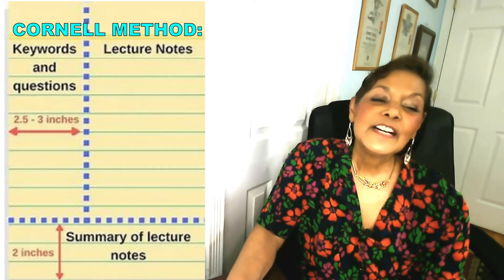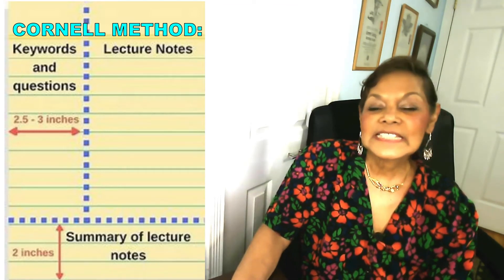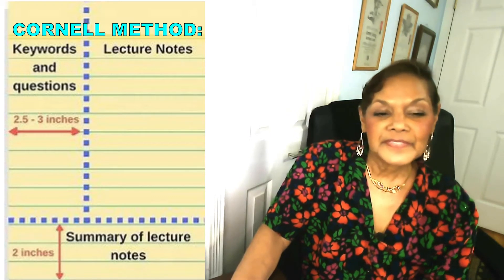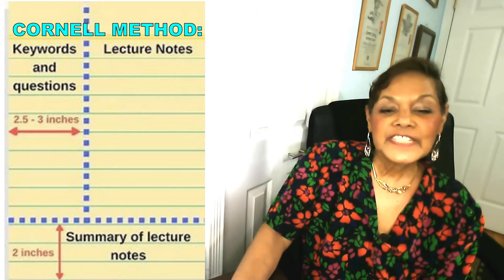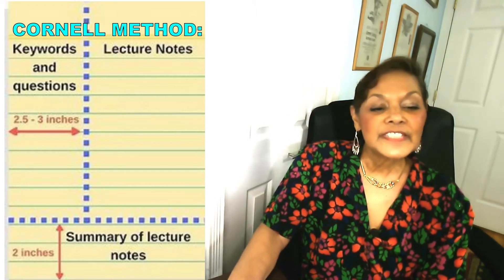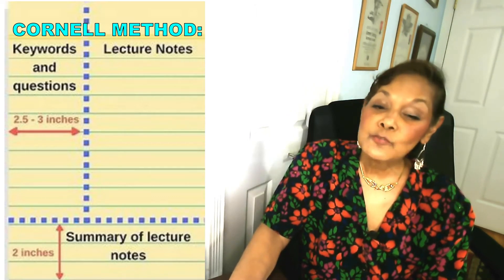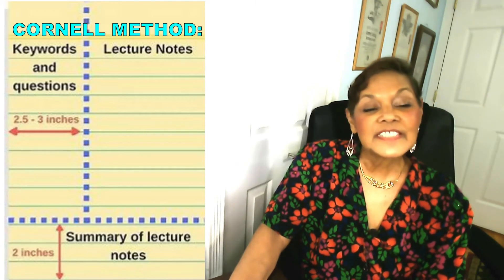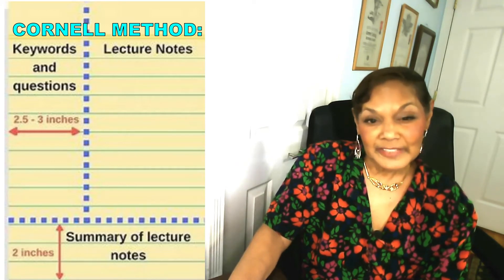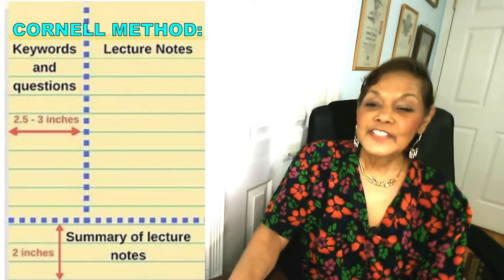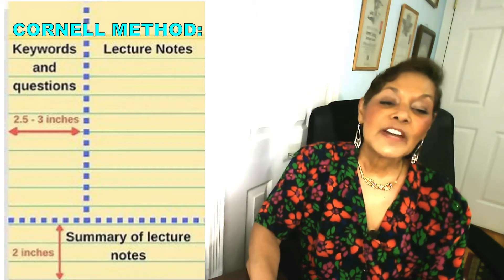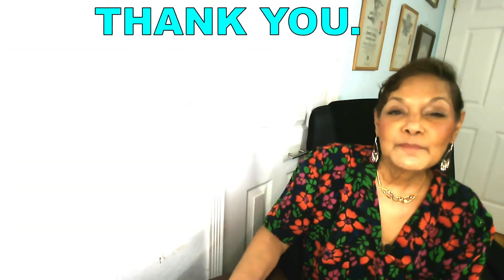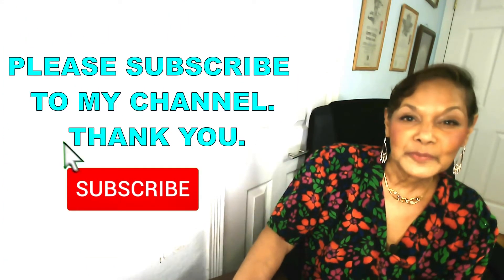Write down the main points of the lesson in the wide column. After taking those notes, the student can use the narrow column to write questions or key vocabulary. The student can then write a summary of the lesson in the box below.